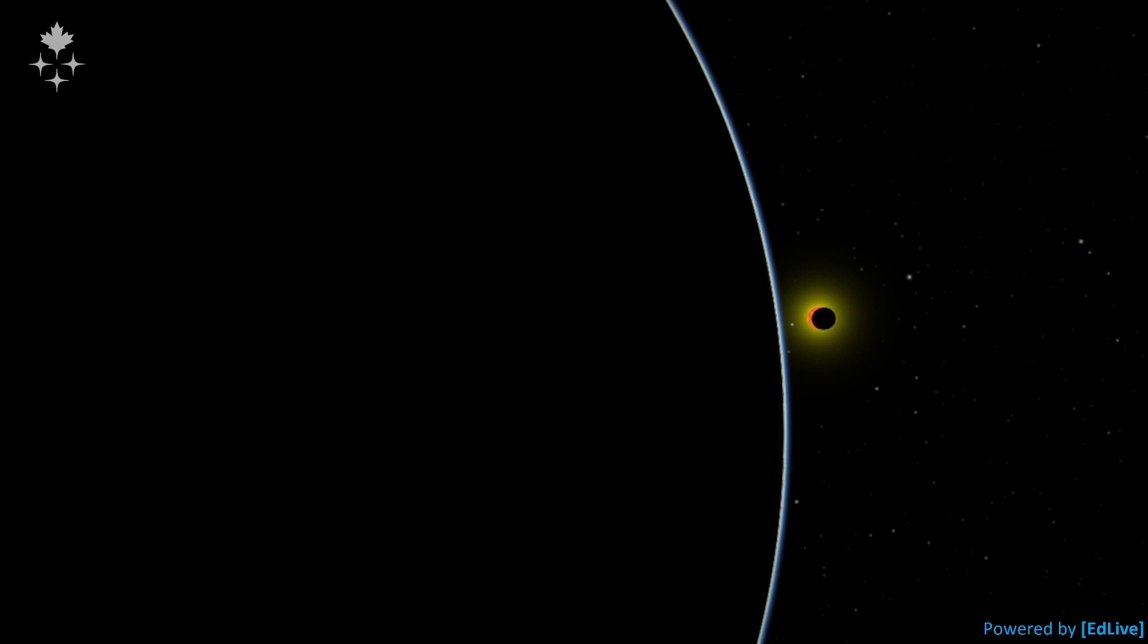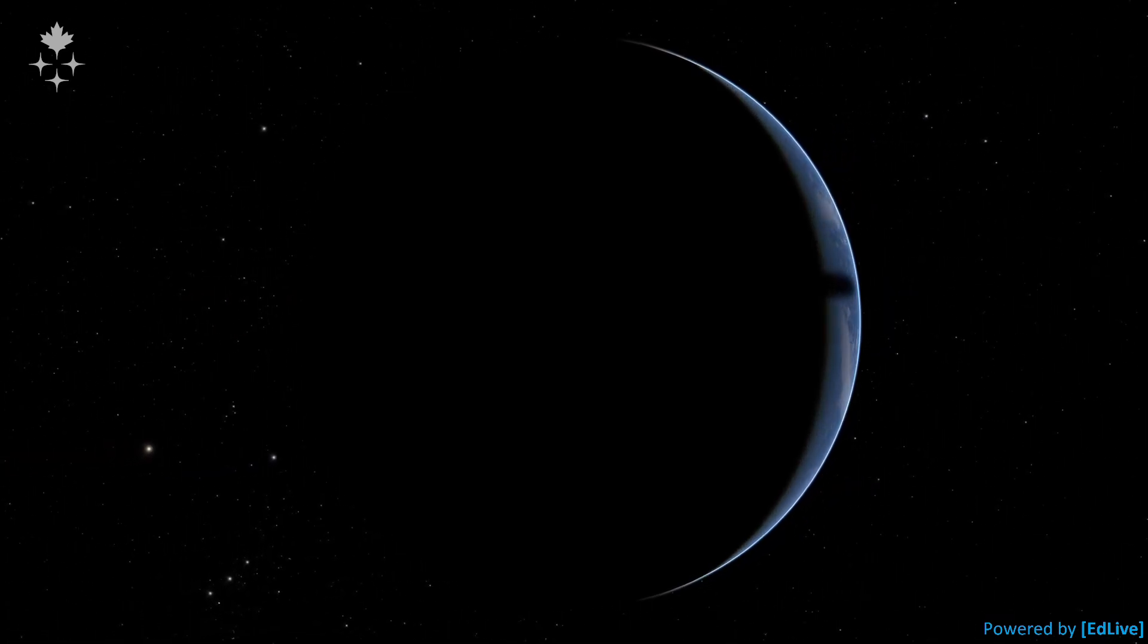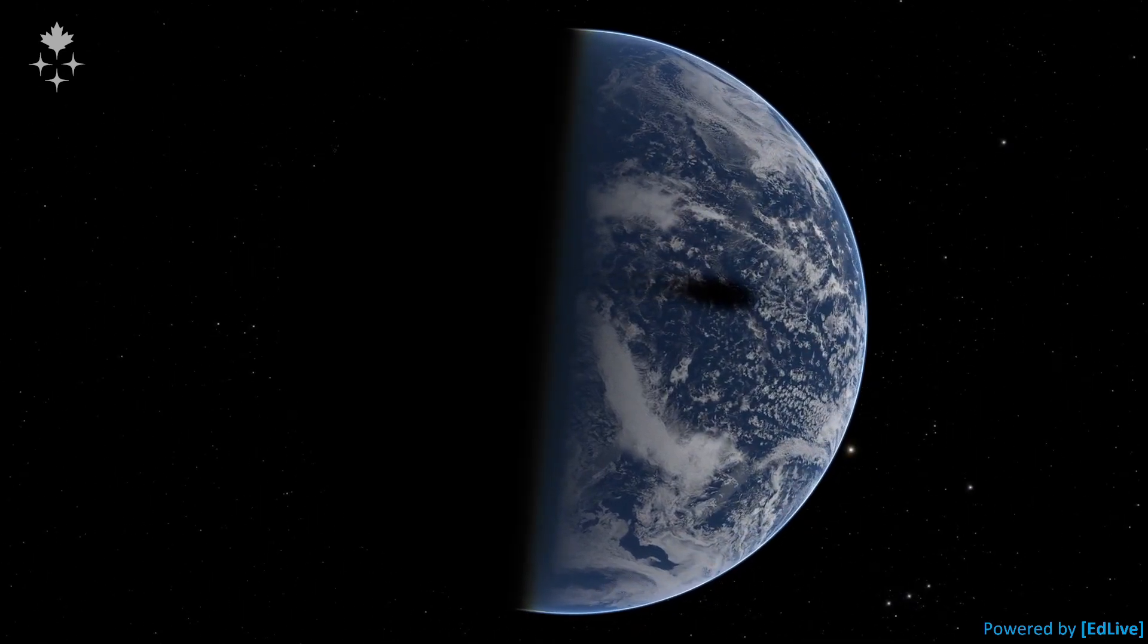Thanks to mathematics and our scientific knowledge we know exactly when and where the eclipse will happen. It's pretty amazing when you think about it. We can predict precisely this cosmic alignment of the Sun, the Moon, and us.